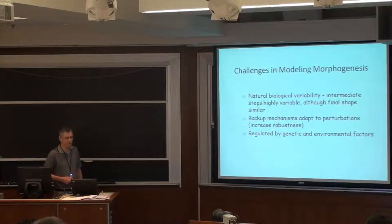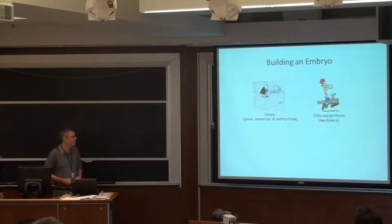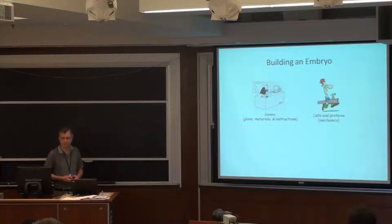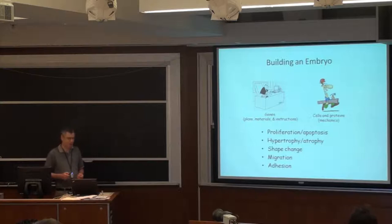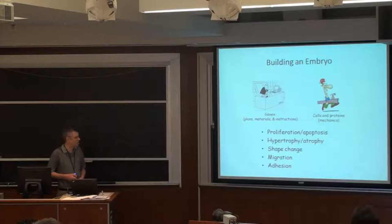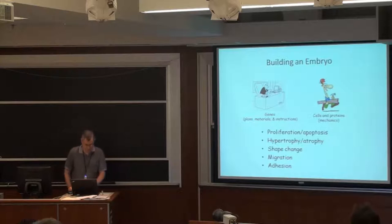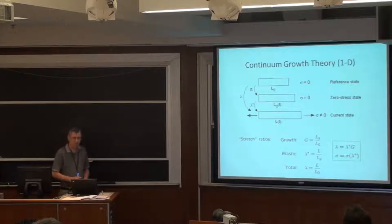These problems are regulated by both genetic and environmental factors, and among the environmental factors are mechanics. In the embryo, the genes are like management: they have the plans, supply the materials, and issue instructions. But it's really the cells and proteins that do the heavy-duty lifting of constructing an embryo. A cell only has a limited number of tools: they can divide and die, grow larger or smaller, undergo active changes in shape, migrate, and adhere to other cells and tissues. But there are an unlimited number of ways these tools can be combined.